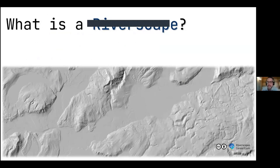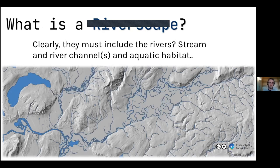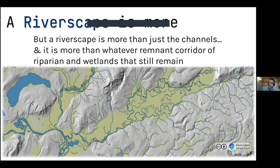First off, what's a riverscape? It's a made-up word that's been with us since at least the 1940s — obviously a juxtaposition of 'river' and 'scape,' hinting at both landscape and river. A riverscape clearly must include the channels — the aquatic habitat, the whole drainage network. But channels alone are not enough. A riverscape is more than just the channels, and more than just the remnant corridor of riparian and wetlands that still remain along its edges.